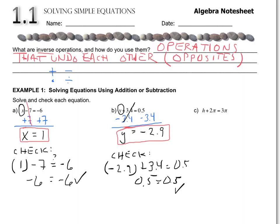This next one is a little interesting because when we see 2π, many of us want to put in 3.14. But this year, there will be many times you leave the pi symbol just as it is. Pi is a number — it is not a variable. What we are actually solving for in this problem is the h.